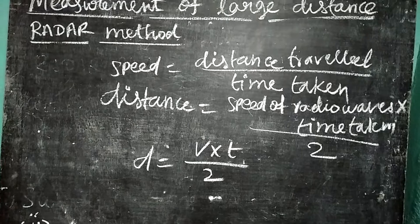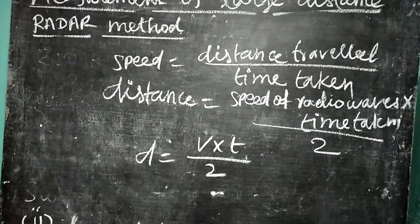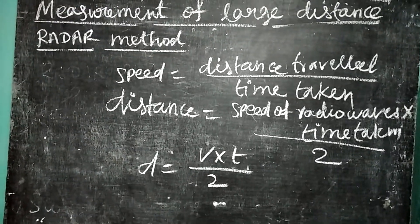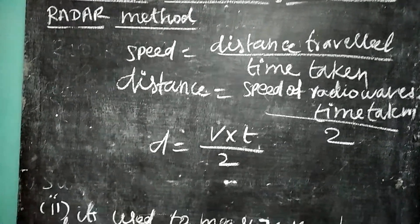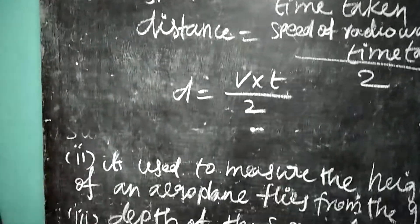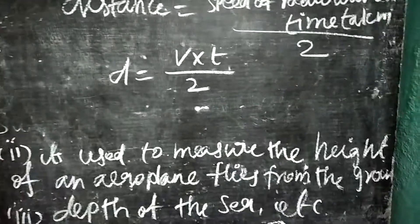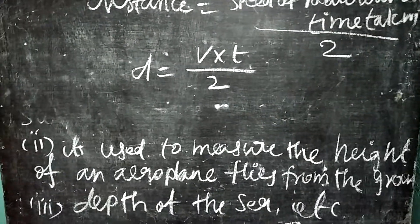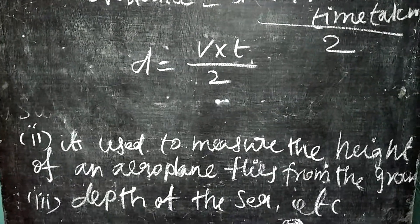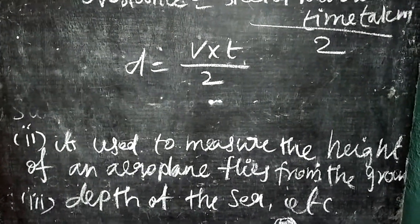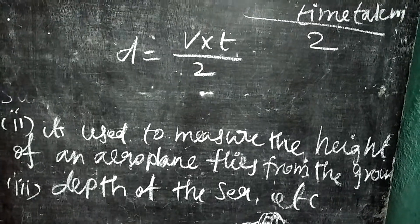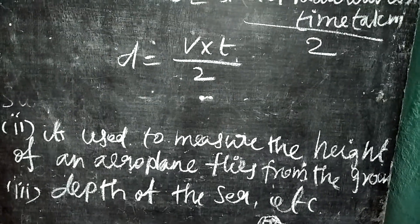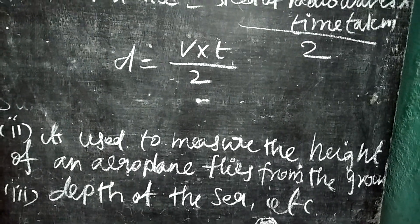Dividing by 2 gives us the actual distance of the object. The radar method is used to measure the height of an aeroplane above the ground, among other applications.